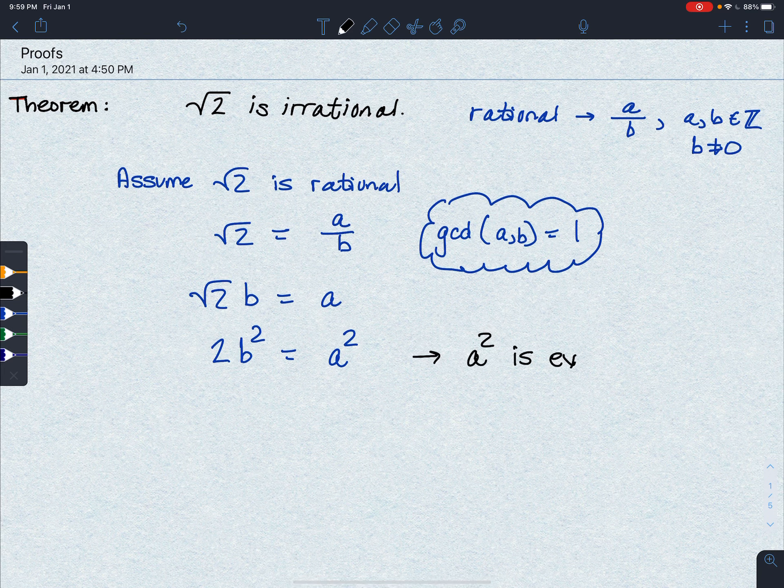Well, we saw in a previous proof that this means that a is also even. We proved by contraposition earlier that a squared being even implies that a is even.